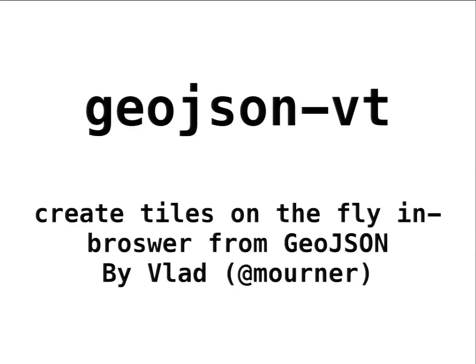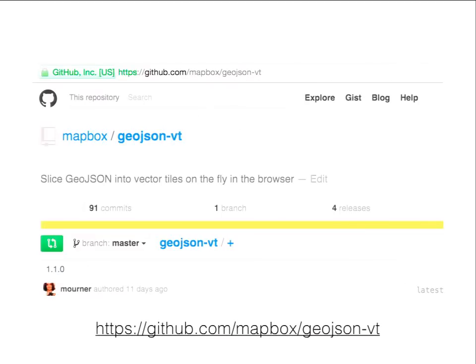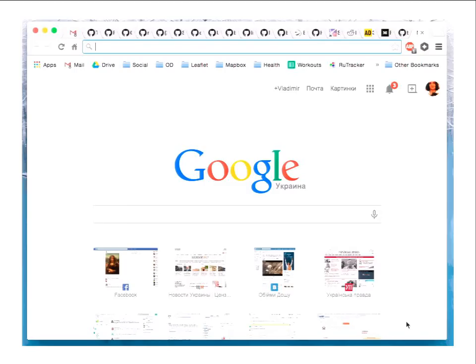So what are the new implementations? GeoJSON VT allows you to create tiles on the fly in the browser from GeoJSON — and maybe other formats in the future. It's extremely efficient and elegant because it generates tiles on demand as you zoom in. Instead of a naive implementation where you go to a zoom level, query the data, clip it, simplify, generate the vector tile, and repeat that whole process at every zoom level, GeoJSON VT stores parent tiles in the cache and re-clips really elegantly based on their relationships. You can check out the library at Mapbox/GeoJSON-VT on GitHub.